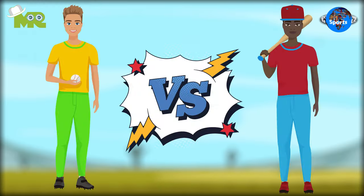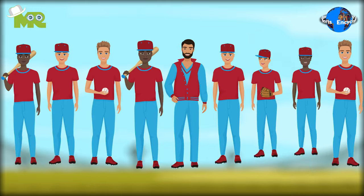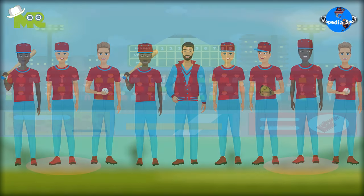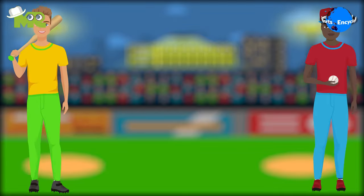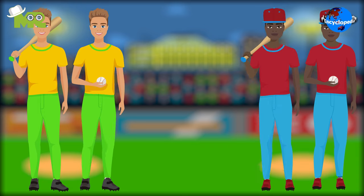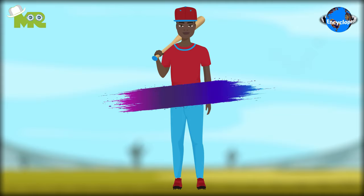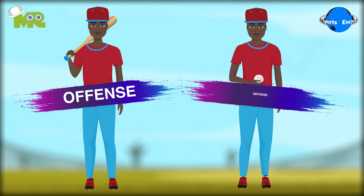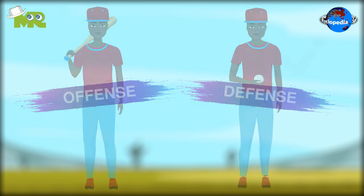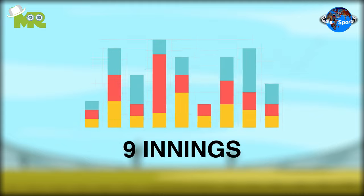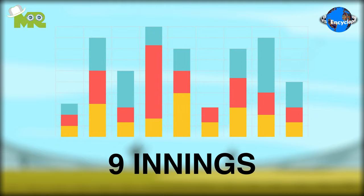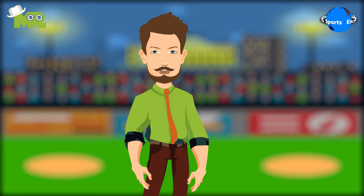Baseball is played between two teams with nine players on each team. Both teams alternate between batting and fielding in each inning. The team batting is known as offense and the team pitching or bowling the ball is known as defense. There are a total of nine innings in the game with no time limit. An inning completes when both teams have batted.